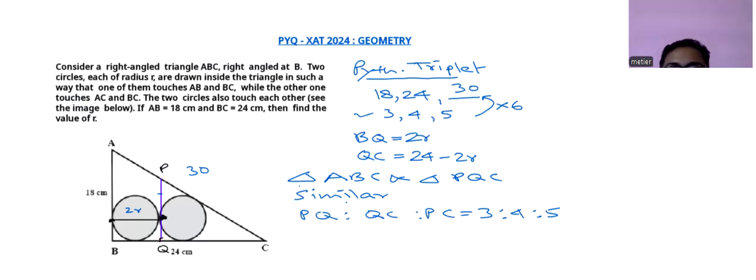So what we can assume here, let PQ be 3x, QC be 4x, and PC be 5x.